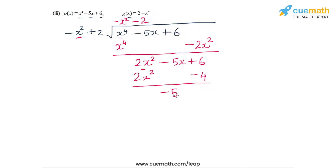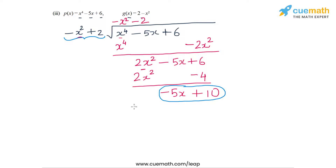After subtracting again, we get -5x + 10. The degree of this remaining polynomial is 1, which is less than the degree of the divisor, which is 2, so the division process terminates. The quotient polynomial is -x² - 2 and the remainder polynomial is -5x + 10, a linear polynomial. That completes Part 3 and Question 1.